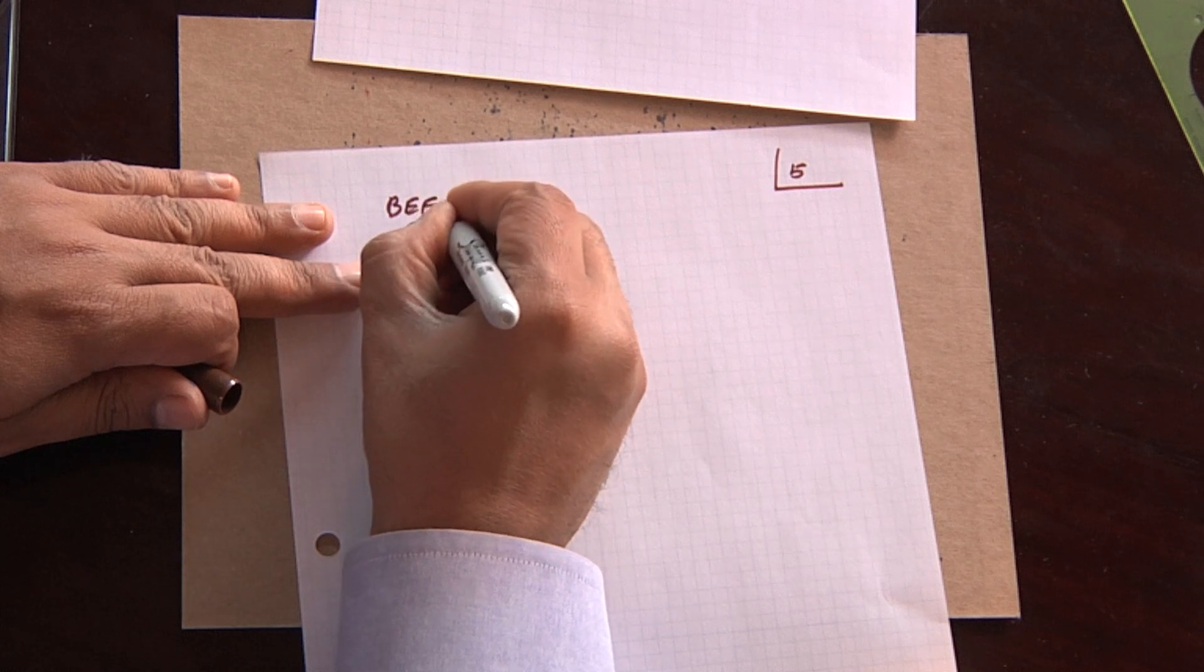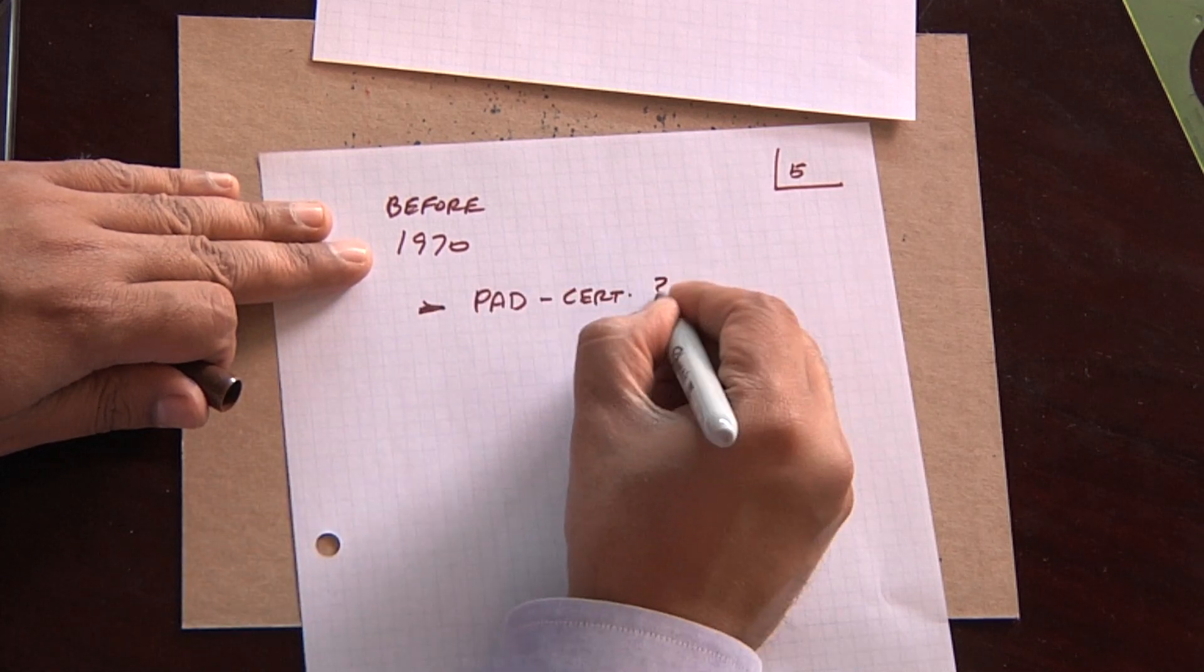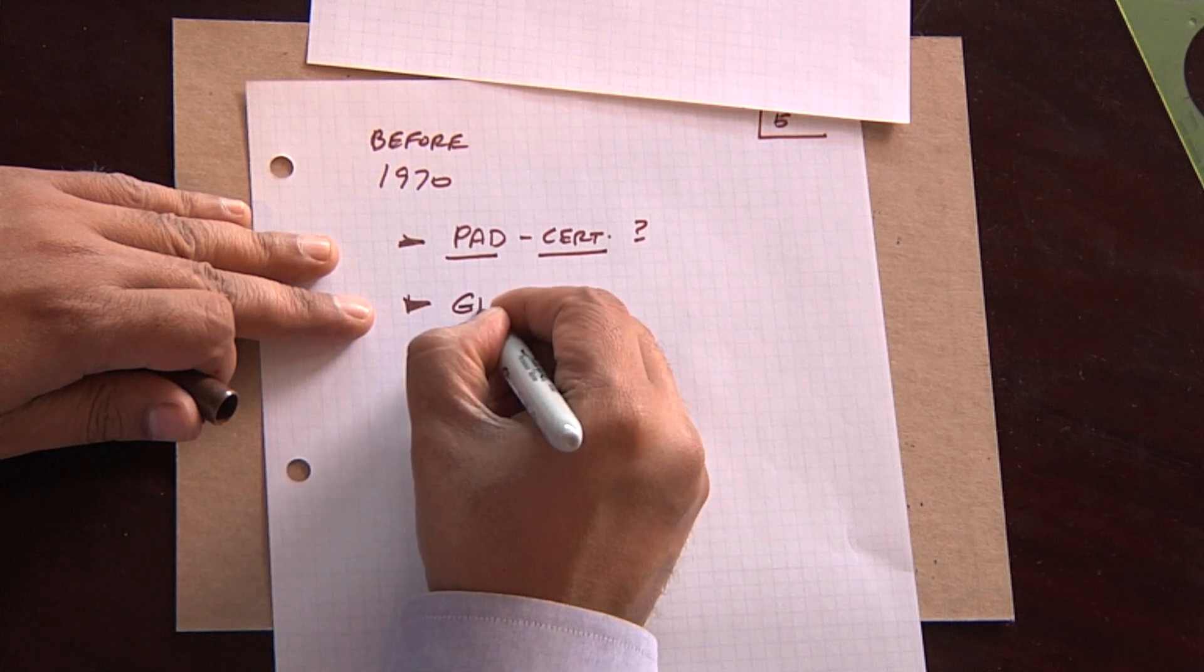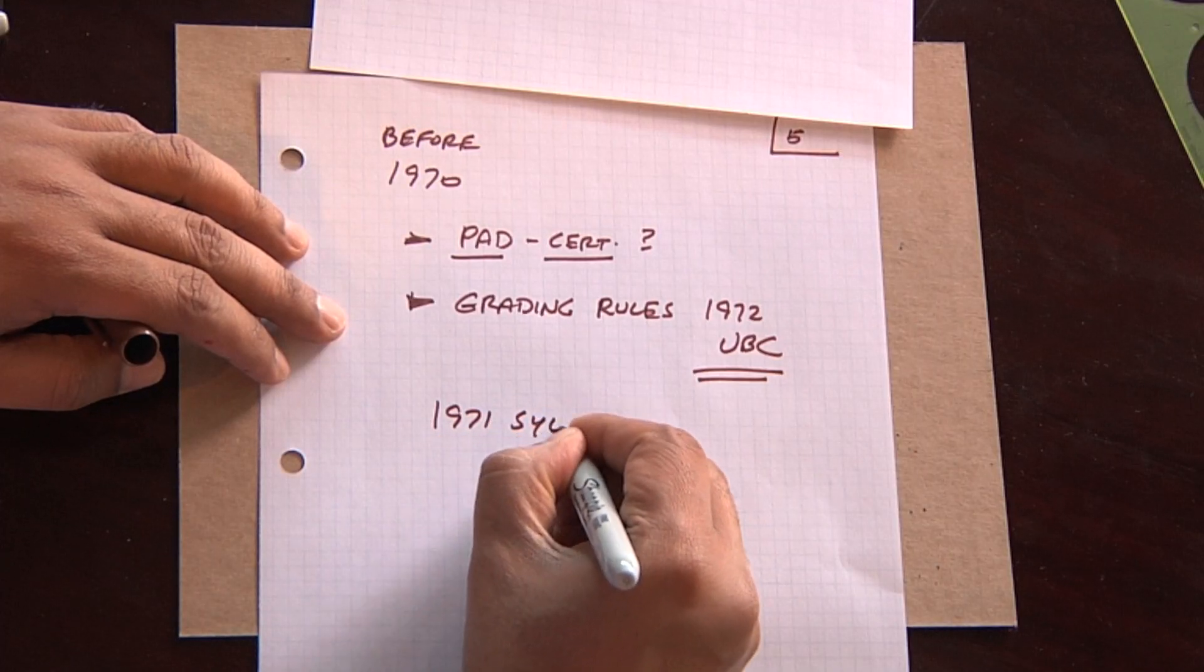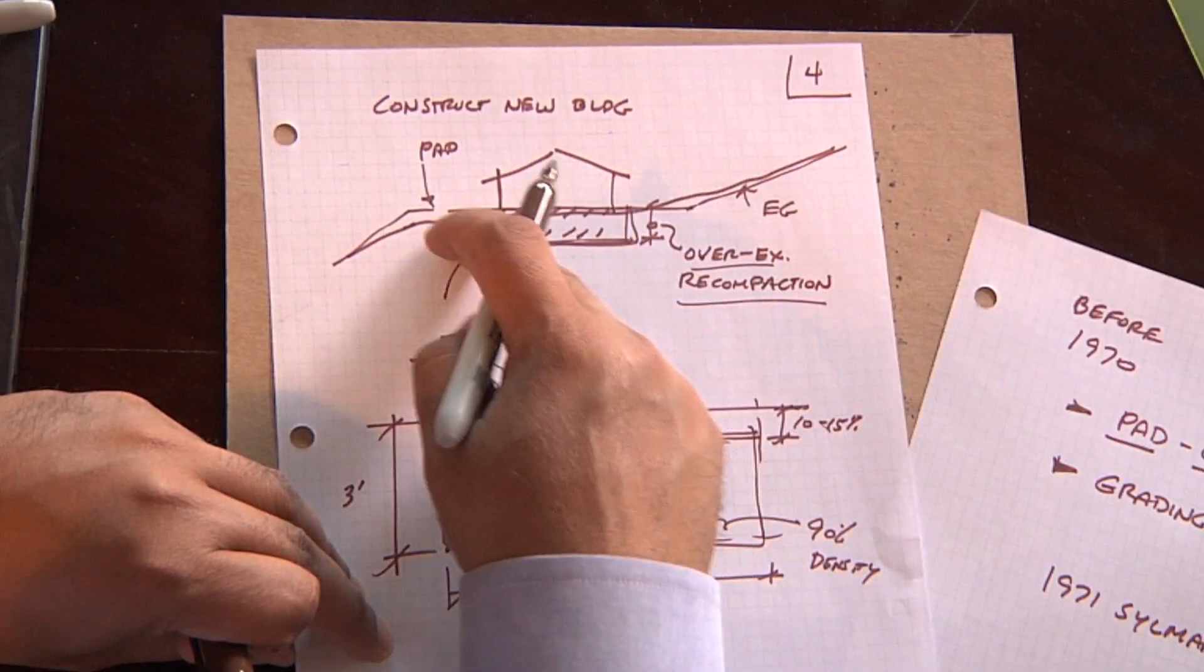The interesting thing about this is that that was not always the case. Before 1970, we didn't have pad certification. So buildings that were built before 1970, we don't know if the pads are certified. Also, they don't comply with the grading ordinances. 1972 was a landmark date because we had a major earthquake in 1971. That was the Sylmar earthquake. That caused all kinds of code changes, which were incorporated. And so buildings that were built before 1970 may or may not have these type of strict requirements. That's why we're always looking at the date and the age of the structure.